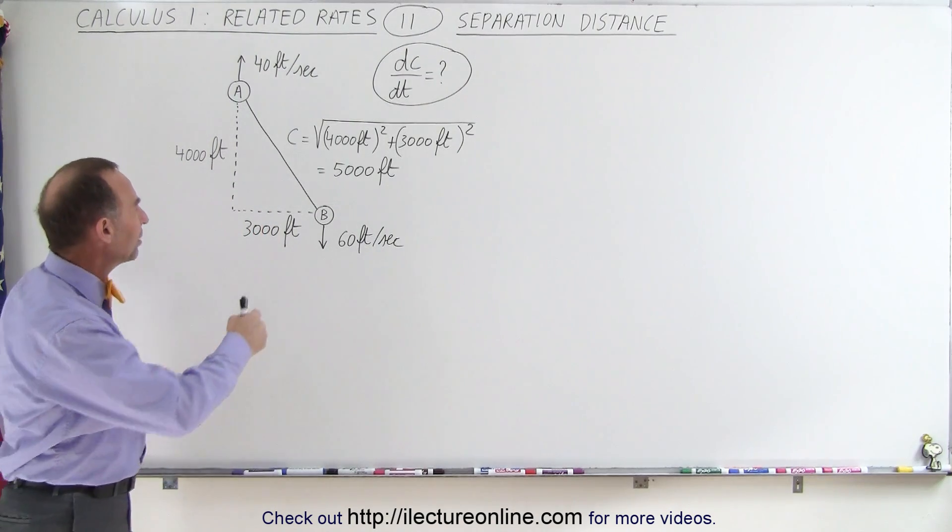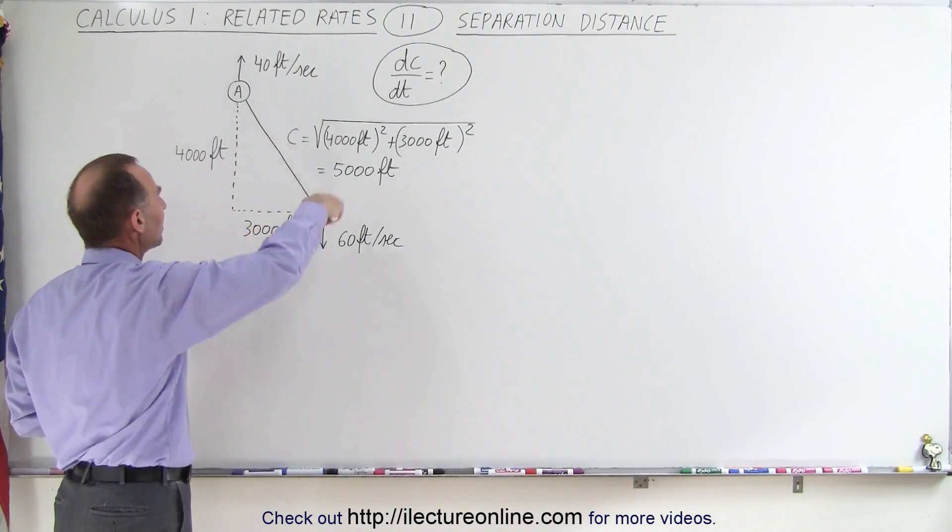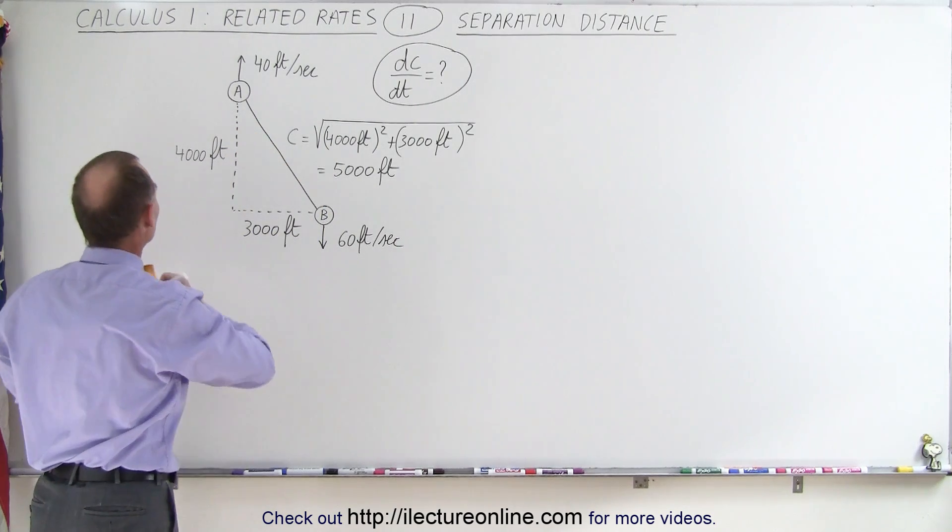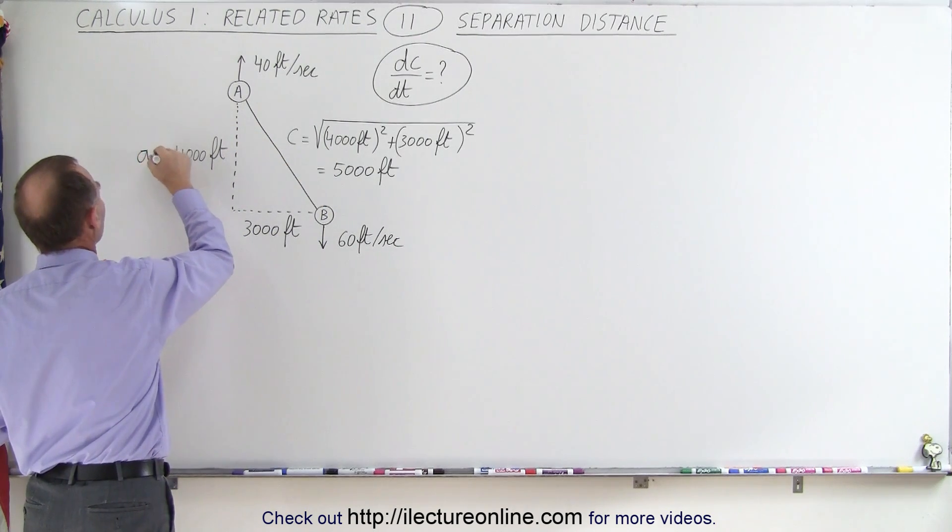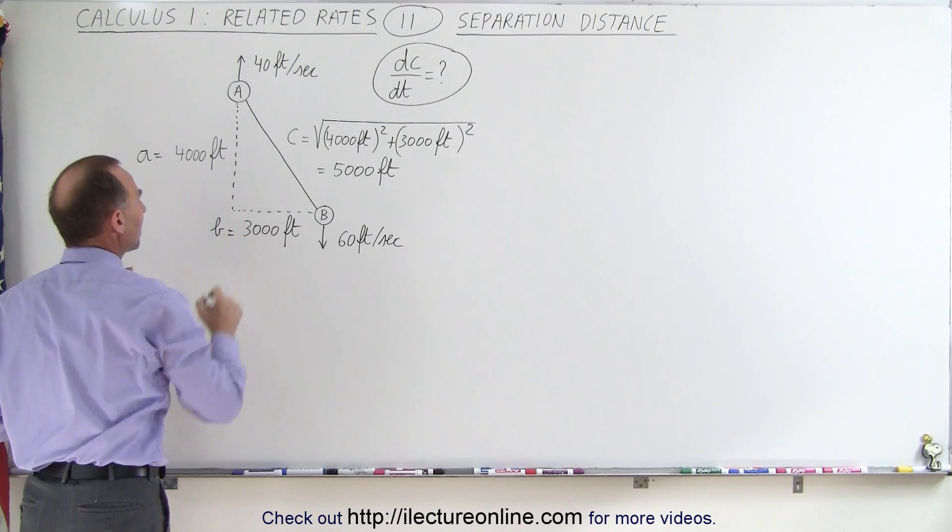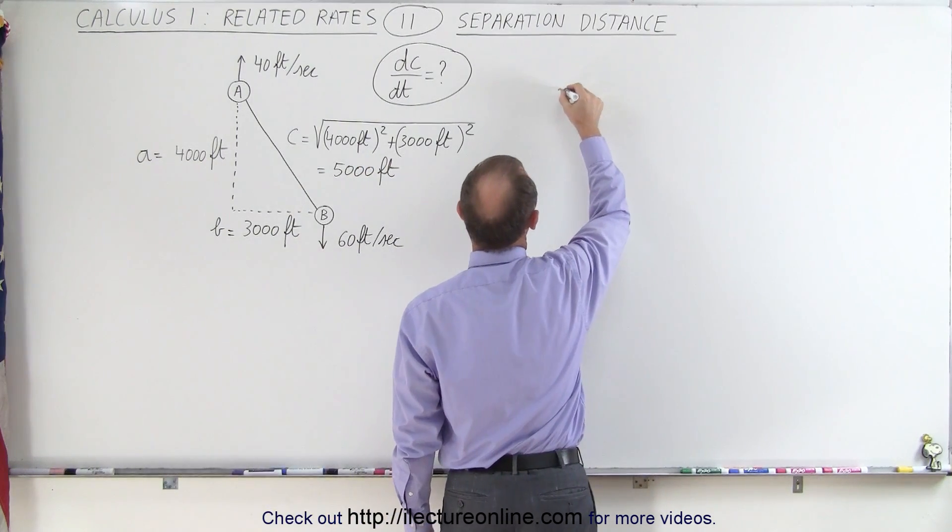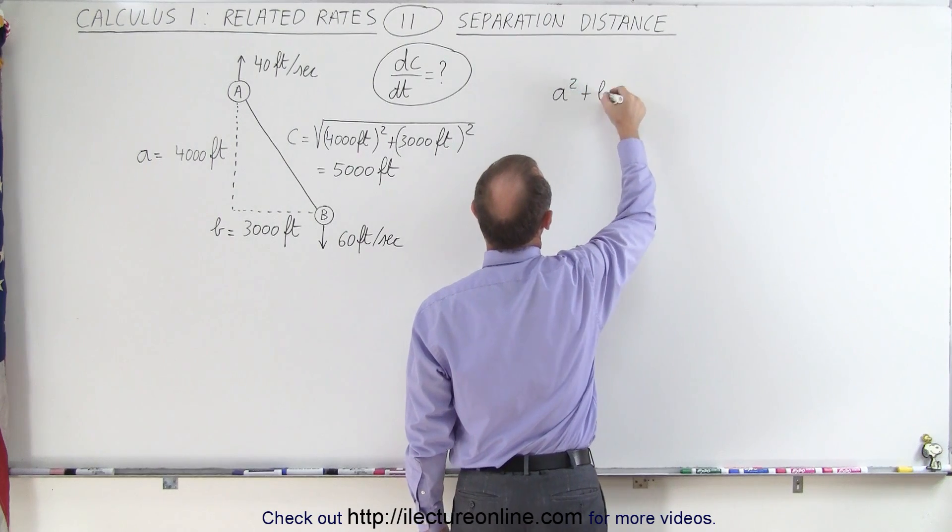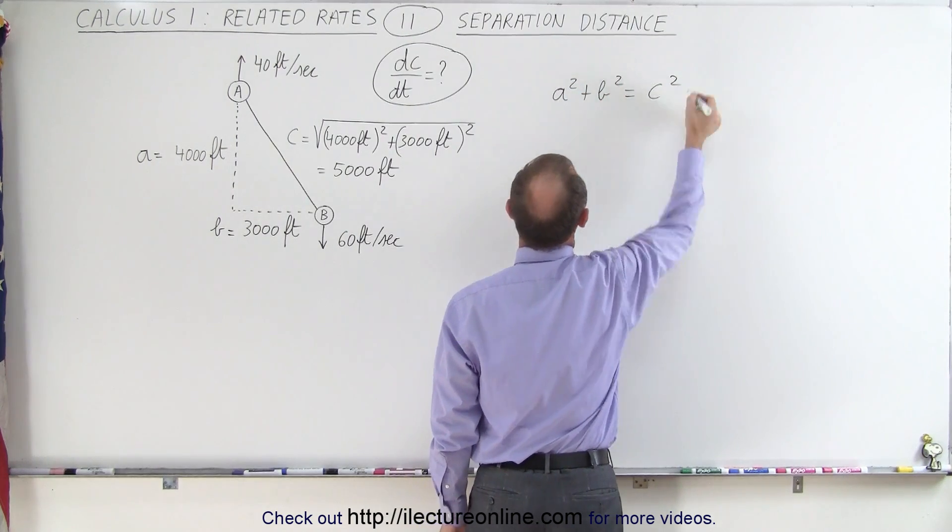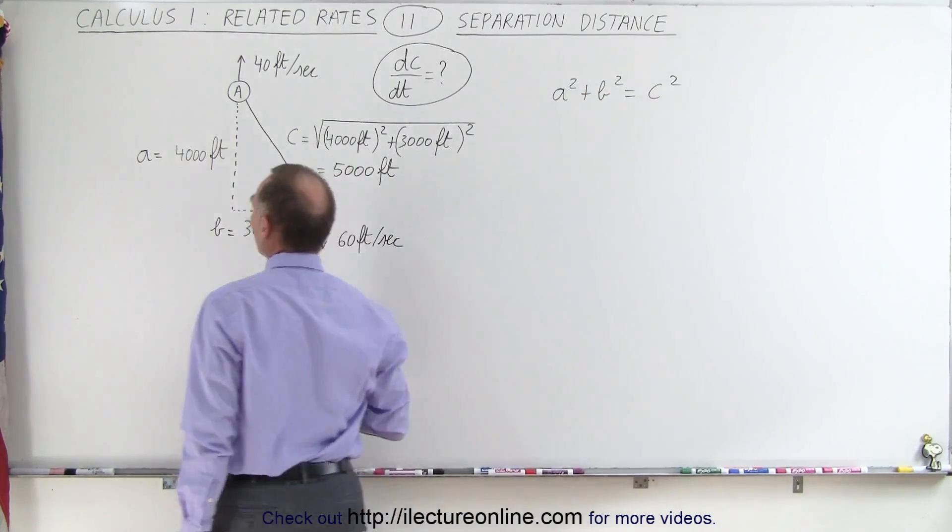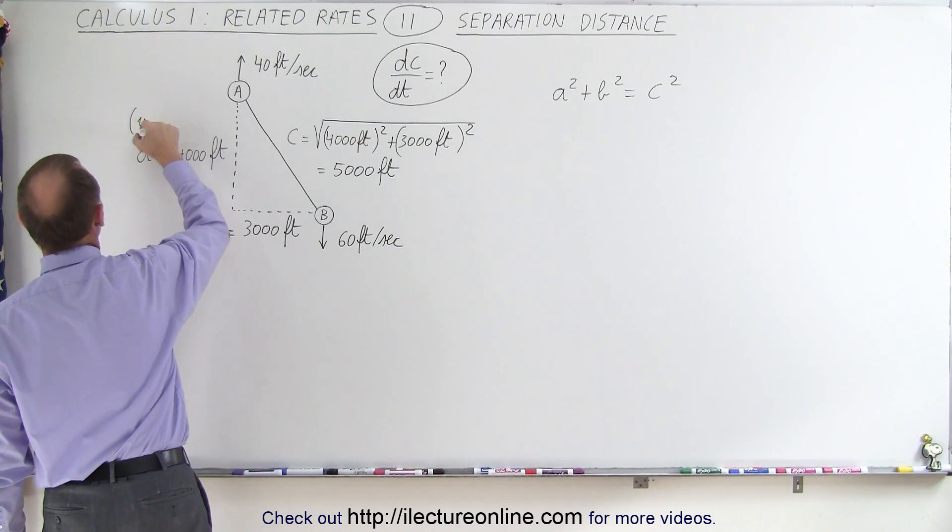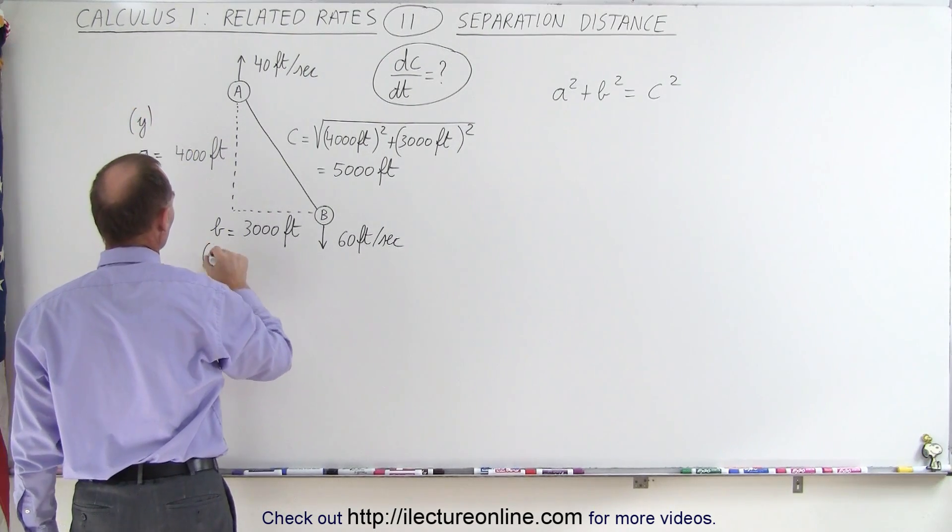All right, the way to do that is we need to find the relationship between the sides and the hypotenuse. Let's call this side A, and let's call this side B. And so what we could say is that A squared plus B squared equals C squared. Of course, we could use the variable Y for the vertical direction, and we can use the variable X.